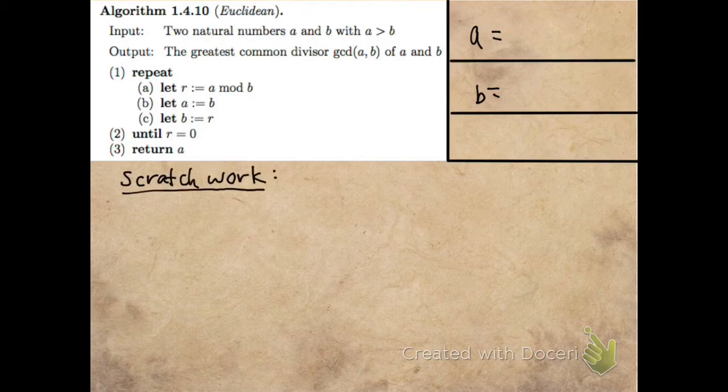I'll put my scratch work down here. Let's work through the example where we compute the GCD of 57 and 21. So A is 57 and B is 21.